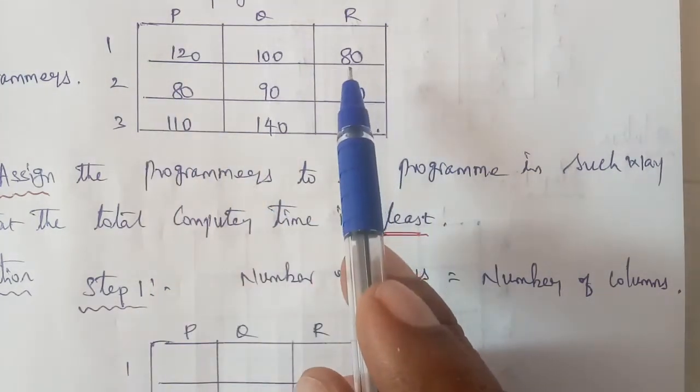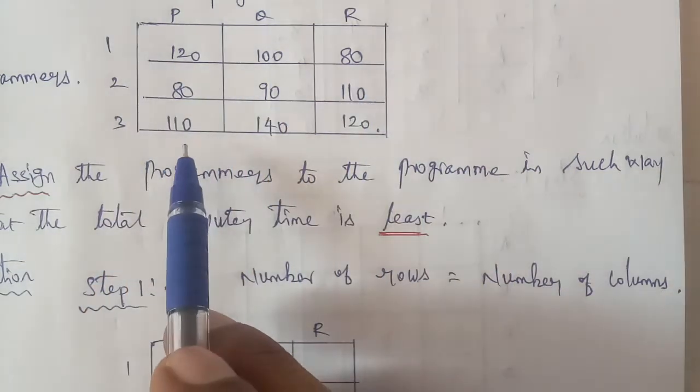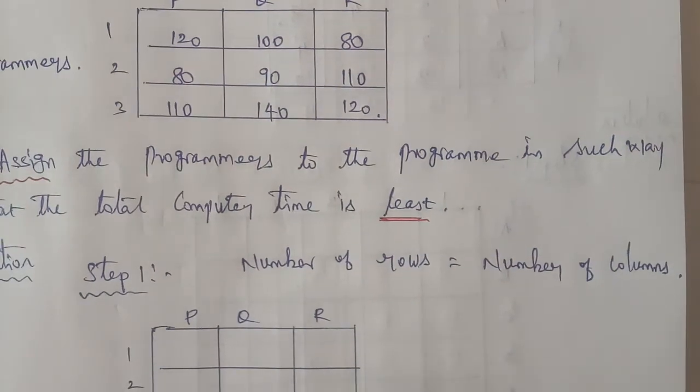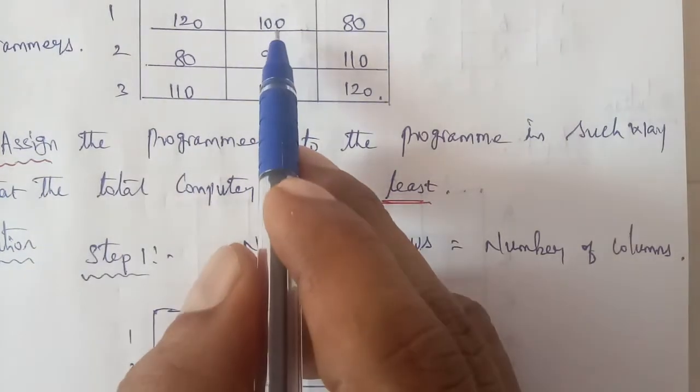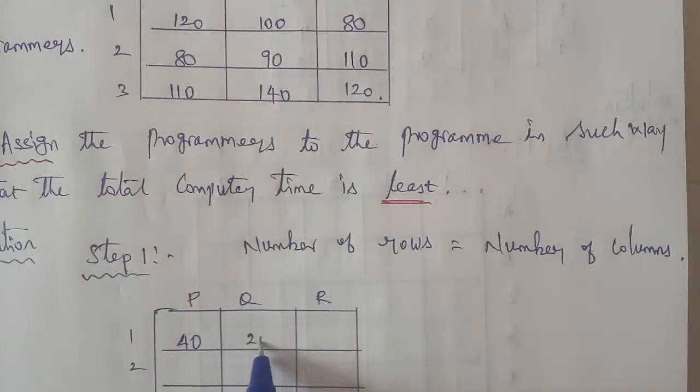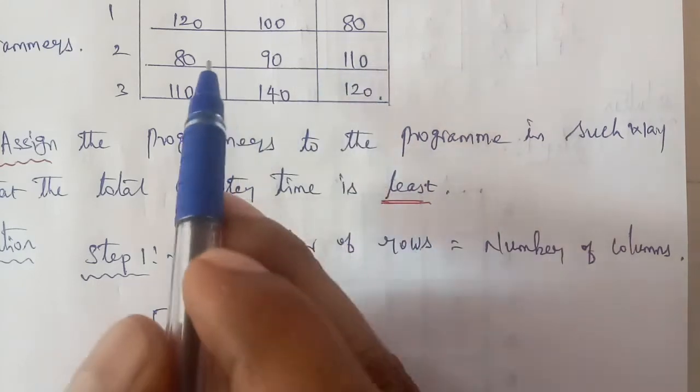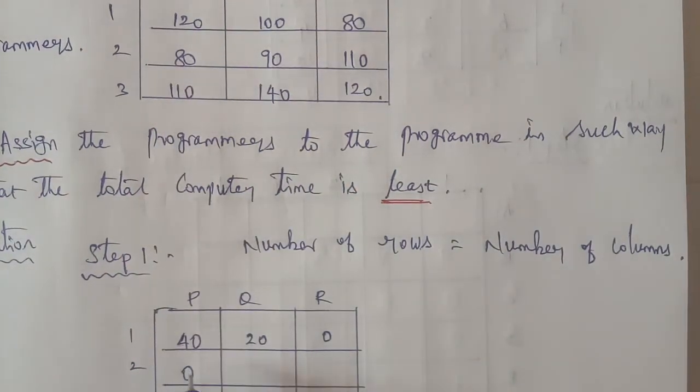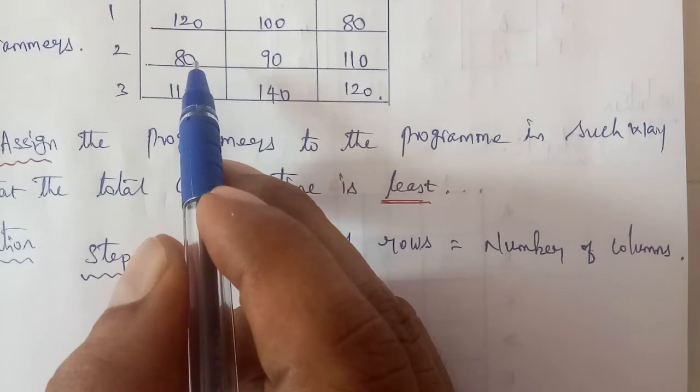Choose the least number from one row. Second row, the least number is 80, 90 and 110. So 80 is the least number, choose this number. 80 minus 80 is 0. Next is 90 minus 80 is 10. Next 110 minus 80 is 30.